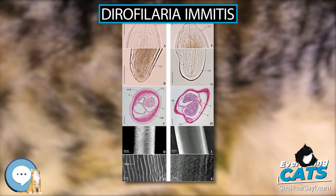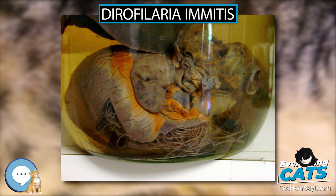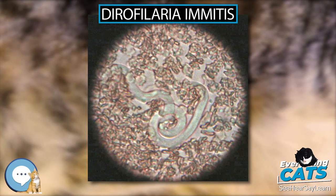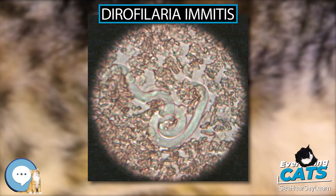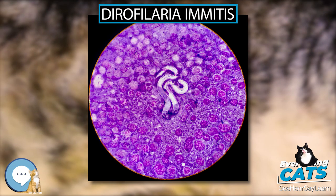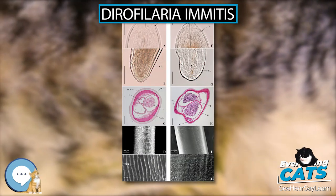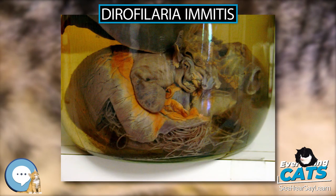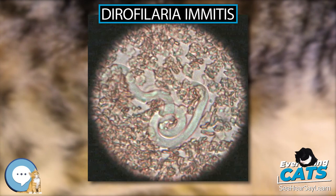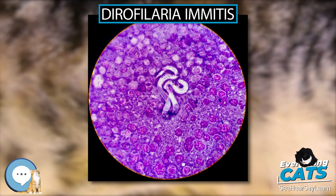Acute heartworm disease in cats can result in shock, vomiting, diarrhea, fainting, and sudden death. Chronic infection can cause loss of appetite, weight loss, lethargy, exercise intolerance, coughing, and difficulty breathing. The signs of heartworm-associated respiratory disease can persist even after complete elimination of the infection. Normally, a cat's immune response is strong enough to clear a heartworm infection; however, the immune response itself can cause the same signs associated with heartworm disease, and a cat can still have respiratory damage after the infection is resolved.